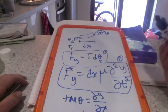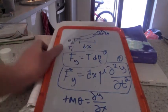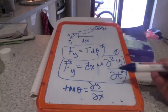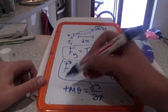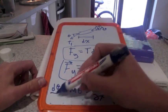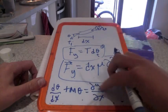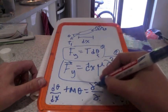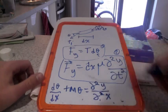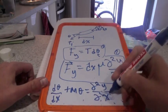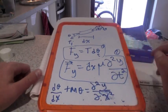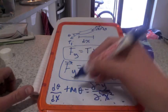It's infinitesimal, so I put a d there, and this is a partial derivative only because I'm keeping time constant. I take the derivative of that with respect to x, so d-theta over dx becomes the second partial derivative of y with respect to x.